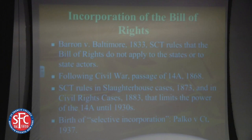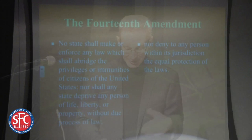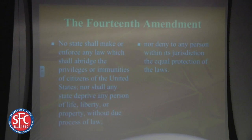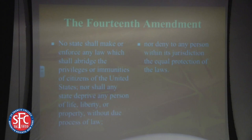Something dramatic happens — the Civil War. After the Civil War, Congress passes three amendments. The most important to us is the 14th Amendment in 1868. The 13th Amendment abolishes slavery, the 15th Amendment protects the right to vote, and the 14th Amendment says: 'No state shall make or enforce any law which shall abridge the privileges or immunities of citizens of the United States, nor shall any state deprive any person of life, liberty, or property without due process of law, nor deny to any person within its jurisdiction the equal protection of the laws.' When anybody mentions civil rights, they're referring to those two clauses of the 14th Amendment — the equal protection clause and the due process clause.